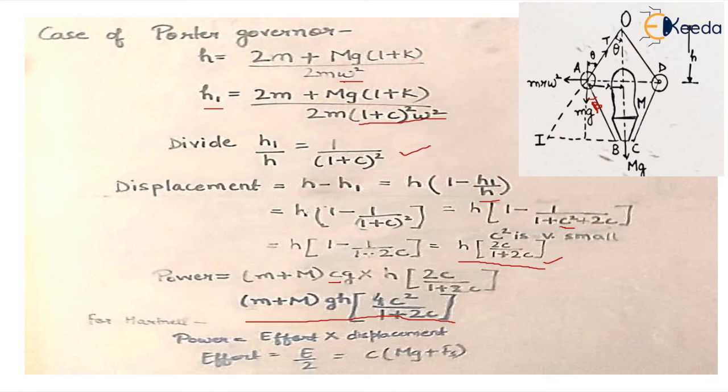k is tan beta upon tan theta upon 2m omega squared. Now when it is moving from position h, from some height h to h1, so there is change in speed. Now it becomes (1+c) whole squared into omega squared. Now if we divide these two equations h1 upon h, all the other factors being common, they get cancelled out and we get 1 upon (1+c) whole squared.